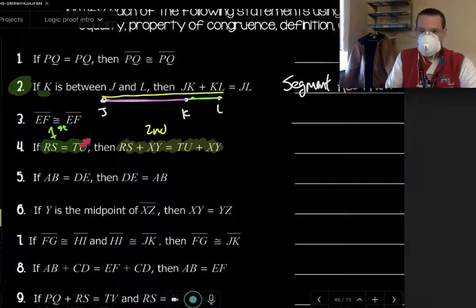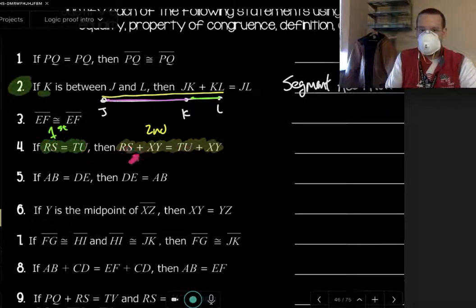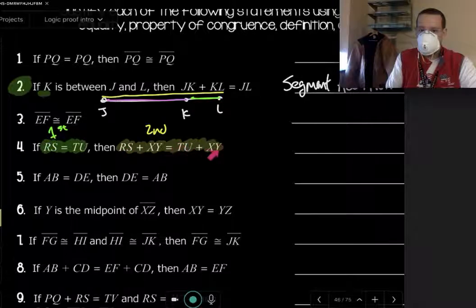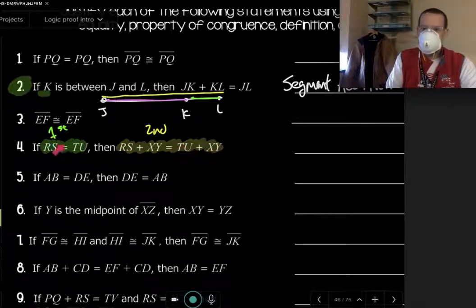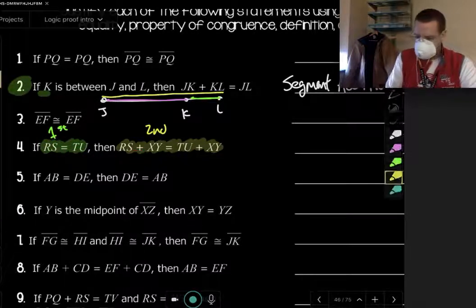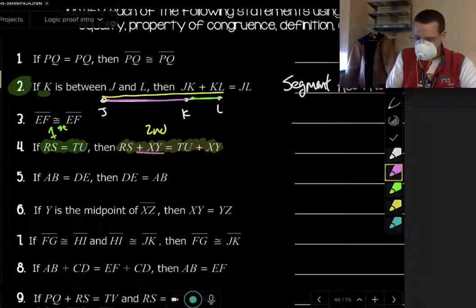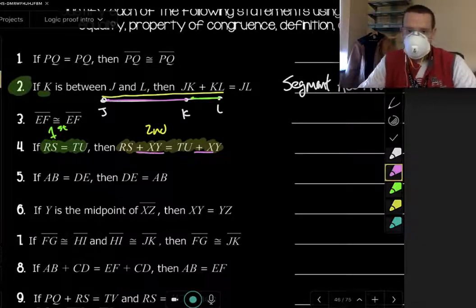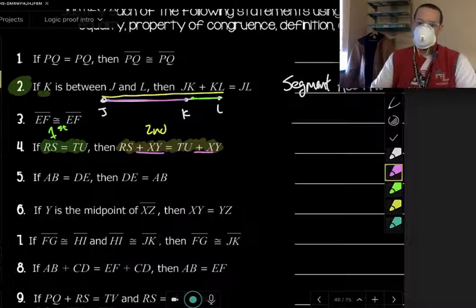Here I have RS is equal to TU, and here I have RS plus XY is equal to TU plus XY. These are measurements. These are measurements of segments. And what happened here? Well, it looks like how these are different is second, there's a plus XY to both sides.